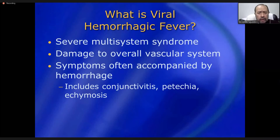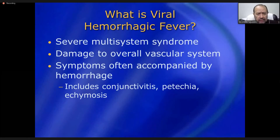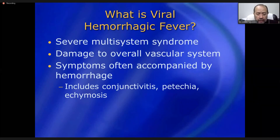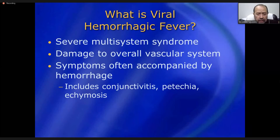Viral hemorrhagic fevers are multi-system syndromes. They damage the overall vascular system, and this vascular damage causes intravascular bleeding, from which most of the symptoms arise. In addition to common general symptoms like fever, malaise, pain, and fatigue, hemorrhagic symptoms appear — such as conjunctivitis, tachycardia, and ecchymosis.